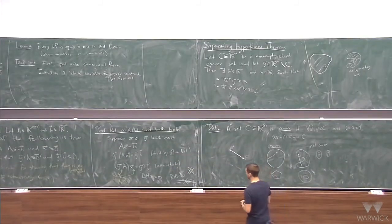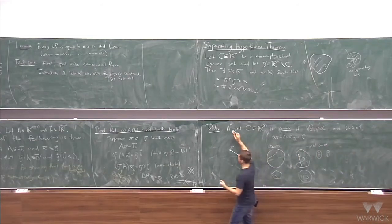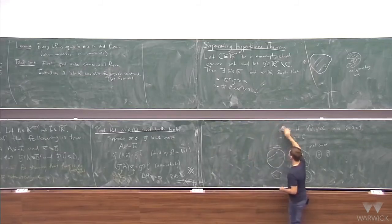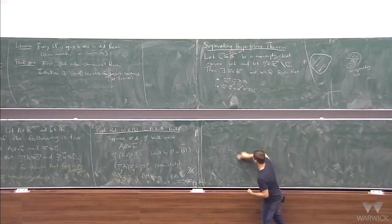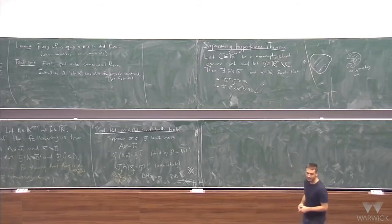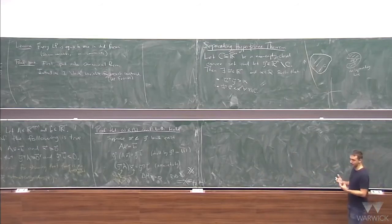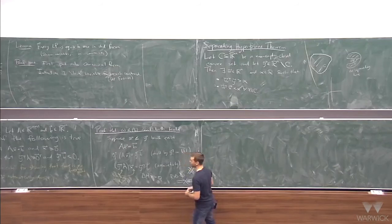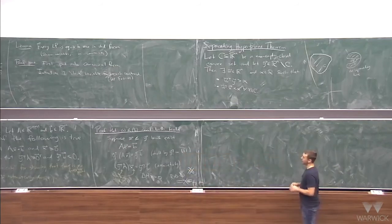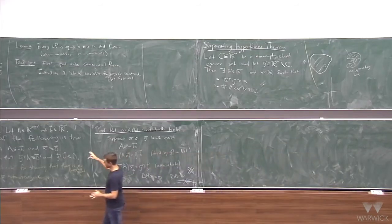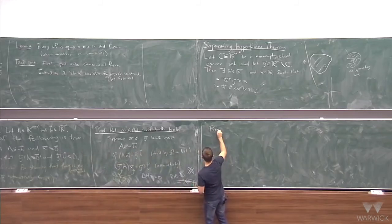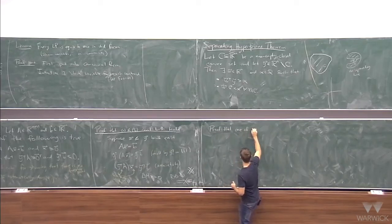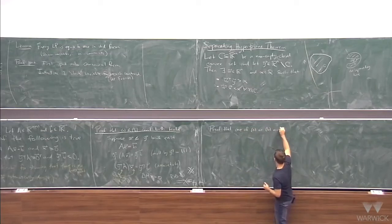So we're still trying to prove Farkas' Lemma. I've already proven that X and Y can't both exist. Now we have to show that at least one of them must exist. Proof that one of A or B must hold. Take this matrix A and define vectors A_1, A_2, up to A_N — let these be the column vectors of A. A is an M by N matrix, so these are all in R^M. Now I'm going to define a set C.